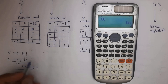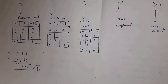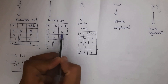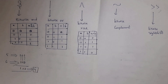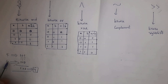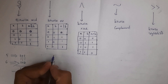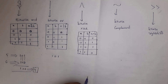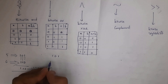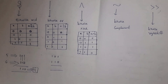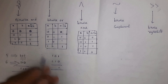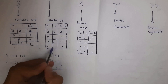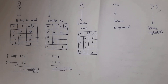For bitwise OR: if both values are 0, result is 0; otherwise result is 1. Performing OR on 5 (binary 101) and 6 (binary 110): 1 OR 1 = 1, 0 OR 1 = 1, 1 OR 0 = 1 — giving binary 111, which equals 7. So 5 | 6 = 7.